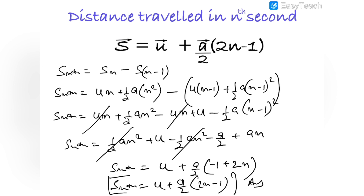Some people say this formula s_nth = u + (a/2)(2n - 1) is dimensionally incorrect, but that's wrong. There is an implicit '1 second' multiplying u, since (n - (n-1)) = 1 second. So u × 1s gives units of displacement. Similarly, the acceleration term also carries a factor of time squared, making it dimensionally consistent.